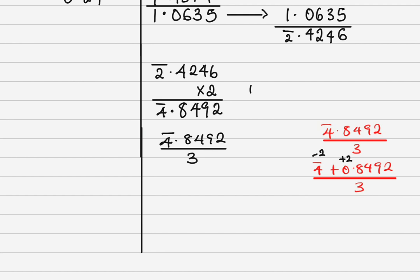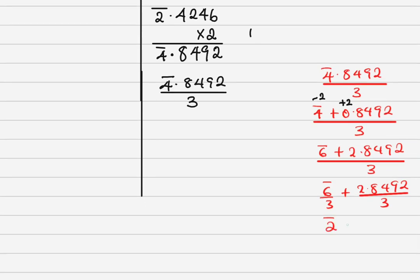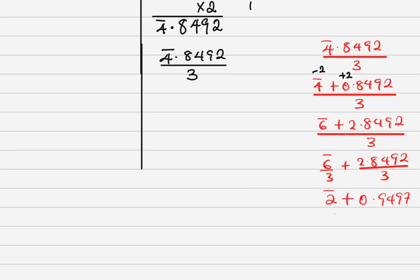Important: you never just change bar 4 to bar 3. You always subtract at the characteristic side and add at the mantissa side. So change bar 4 to bar 6 and add 2 to the mantissa: (bar 6 + 2.8492) / 3. This gives bar 6/3 + 2.8492/3 = bar 2 + 0.9497 = bar 2.9497.